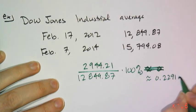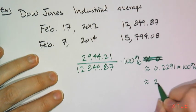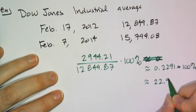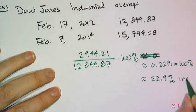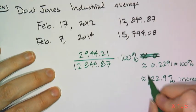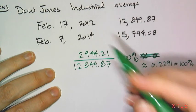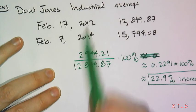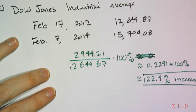That gives 22.9%. In this case it's an increase because it went up. So the percent change in the Dow Jones Industrial Average from 2012 to 2014 was about a 22.9% increase.